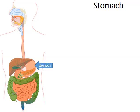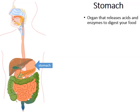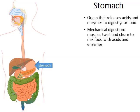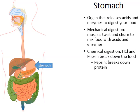Now that the food bolus has made its way into the stomach, the stomach will release acids and enzymes to mechanically and chemically digest that food bolus. Mechanical digestion is when muscles of the stomach twist, churn, and mix the food with various acids and enzymes. The chemical breakdown comes from hydrochloric acid and various enzymes released from the stomach. One enzyme of particular importance is pepsin, which helps to break down proteins.